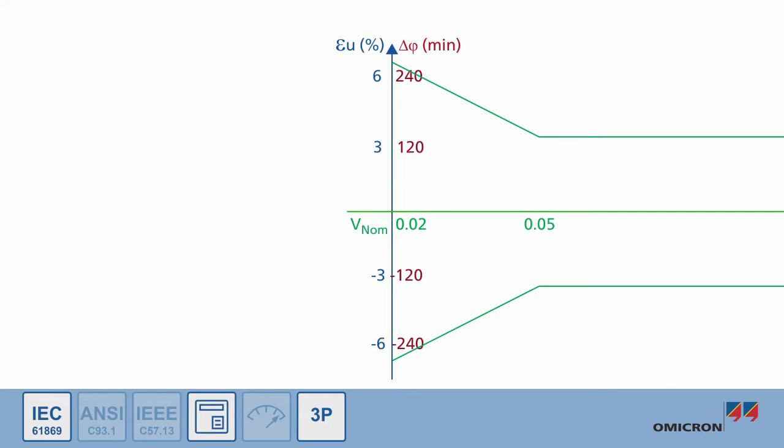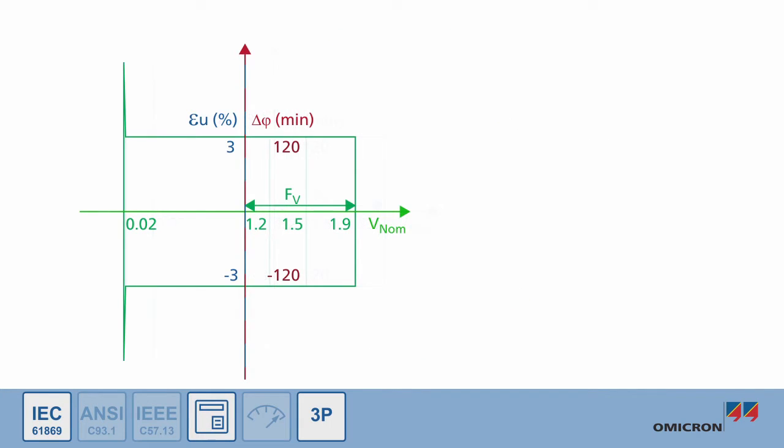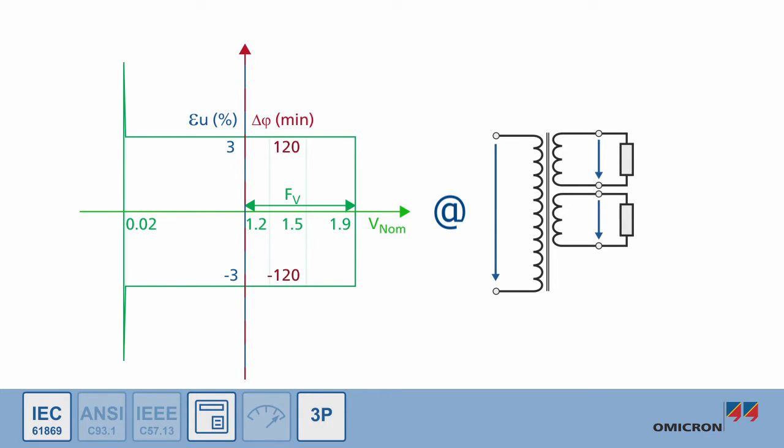At 2% of nominal voltage, the error must not exceed double of what the class limit is. These accuracy requirements must also be maintained by voltage transformers with several secondary windings when all of them are fully loaded.